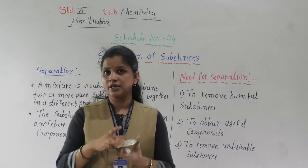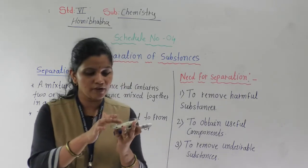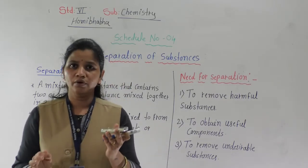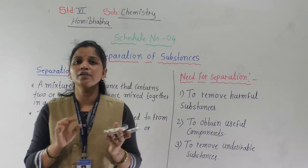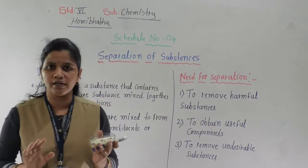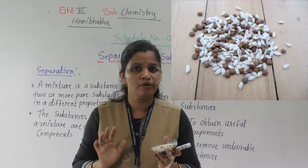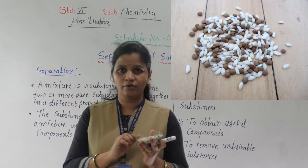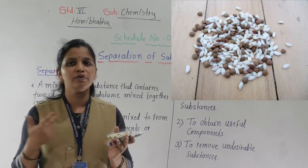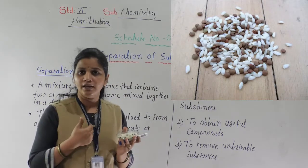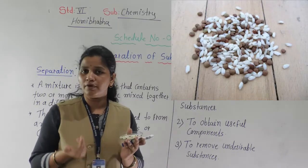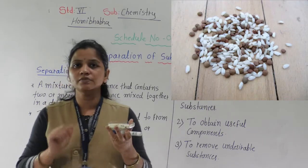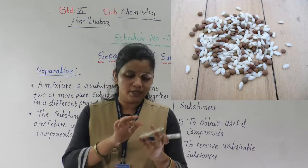In this petri dish there is a mixture of rice and stone. Some unwanted things are there. Which are the unwanted things? Stone. Because stones are not good for our health; they are harmful for us. So, how do we separate this? What will we do?